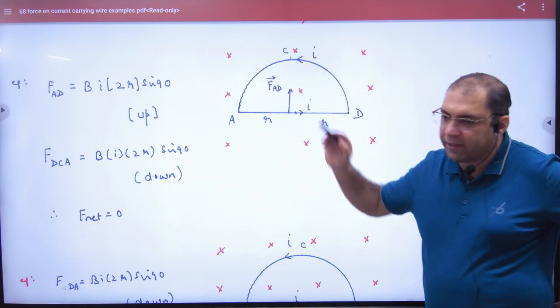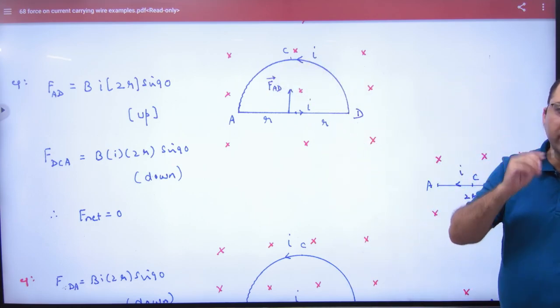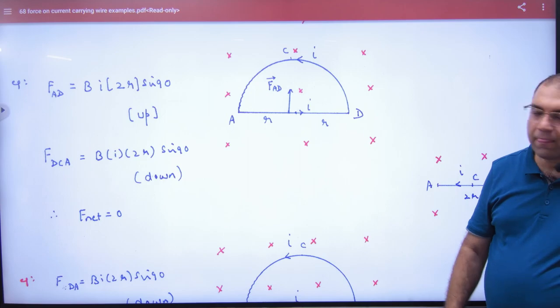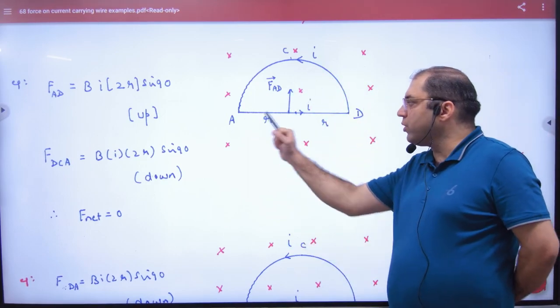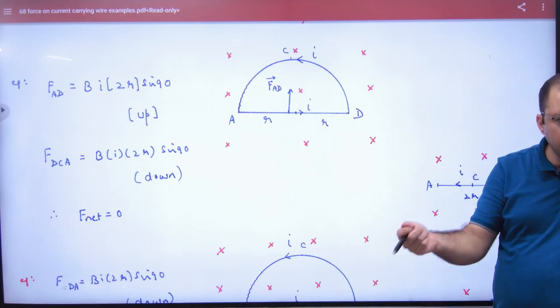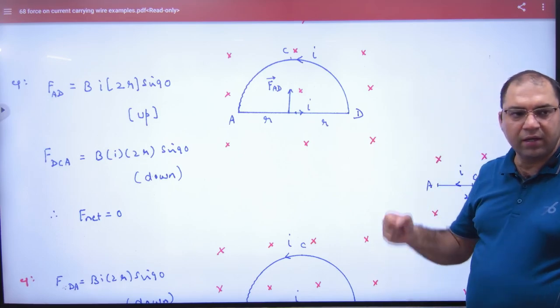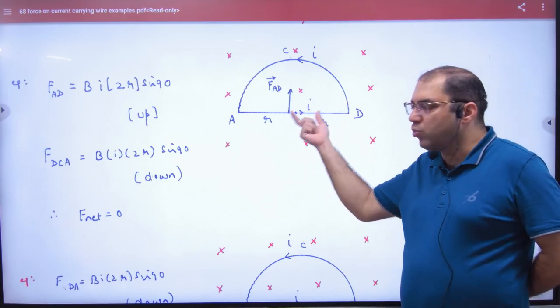How many ways to do this question? The first one, you break it into two parts. If I ask about AD, very straight, the answer is B times I times length 2R times sin 90, and the direction is into the board.